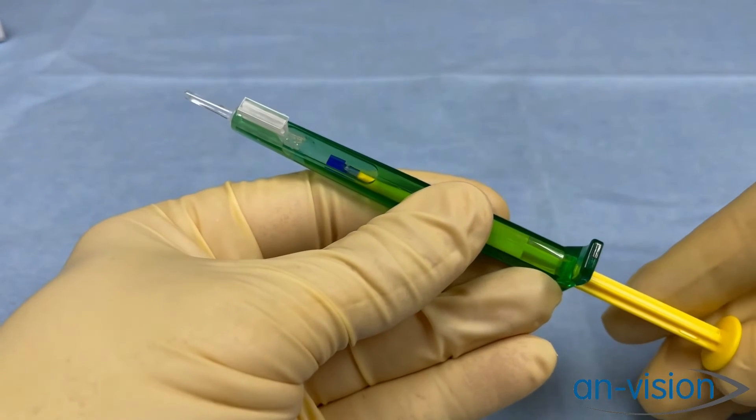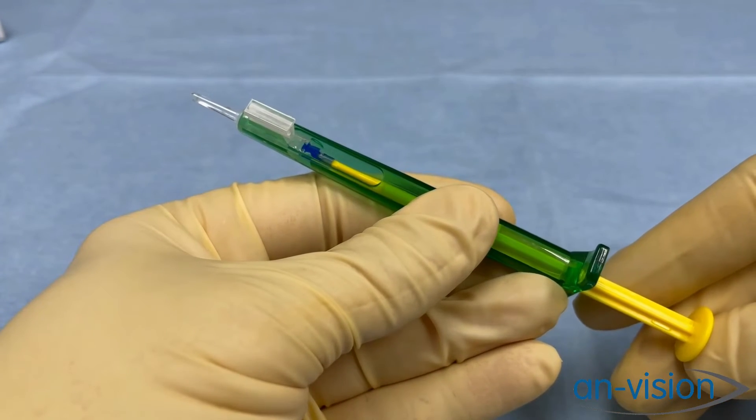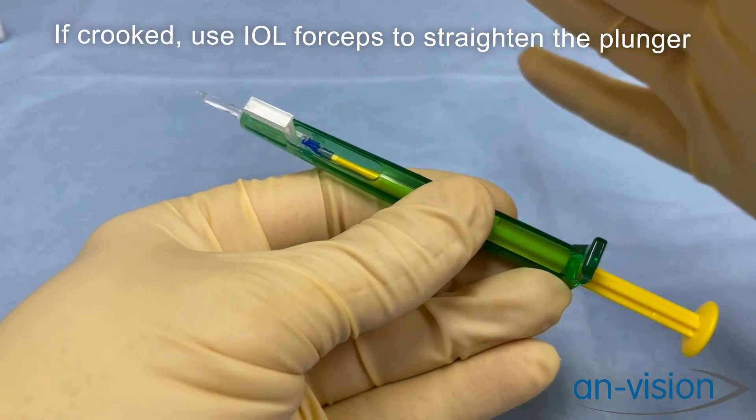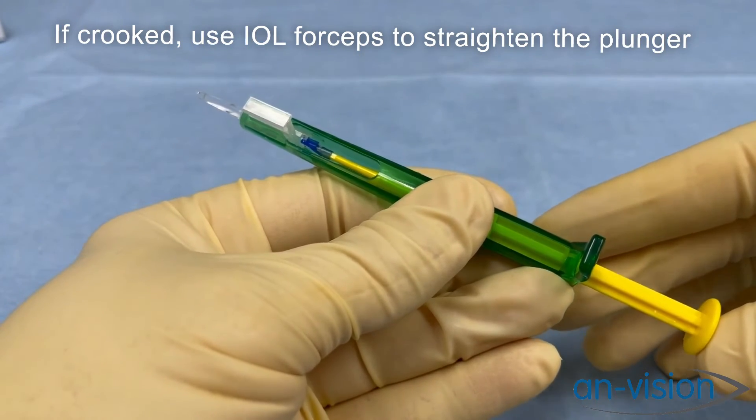As we push this plunger into the loading chamber, we want to make sure that goes in straight. Sometimes it can be angled, but if it goes in straight, there is less chance for it to catch a haptic of the IOL.